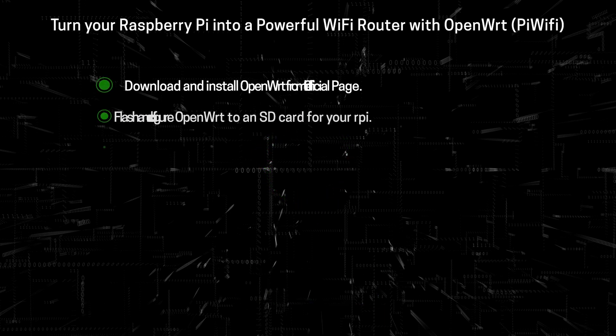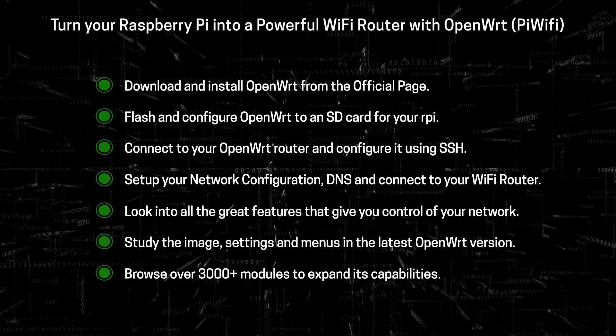The first thing we'll look at is downloading and installing OpenWRT from the official page. The second is configuring your SD card image to burn on your RPI. The third is SSHing into your new OpenWRT router and starting your configuration. The fourth is setting up your network configuration, DNS, and connecting to your Wi-Fi router. The fifth is looking into all the great features that give you control of your network. The sixth is studying the image settings and menus in the latest OpenWRT version. And the seventh is browsing over 3,000 modules and installing ad blockers to expand capabilities.